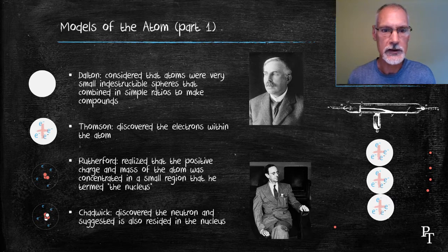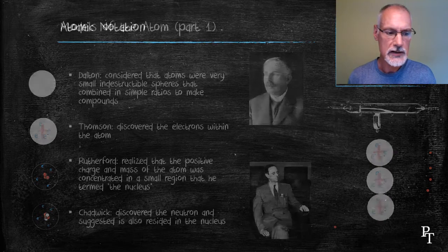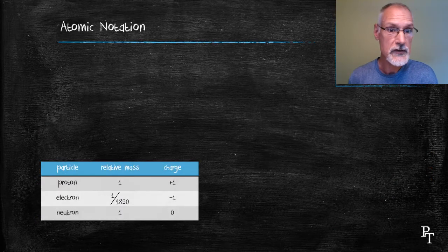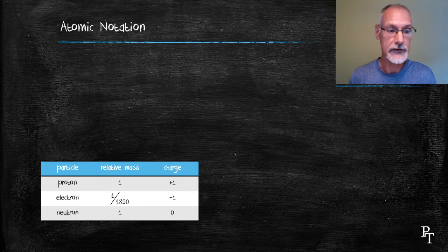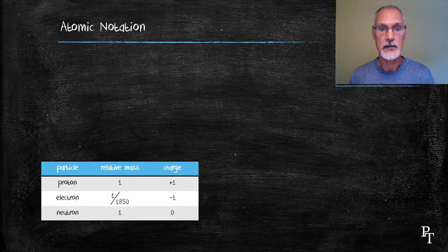So to summarize what we've got so far, we have the proton and neutron, which make up most of the mass of the atom, residing in the nucleus. The electron, which weighs about a small fraction of the mass of the atom, resides outside the nucleus.